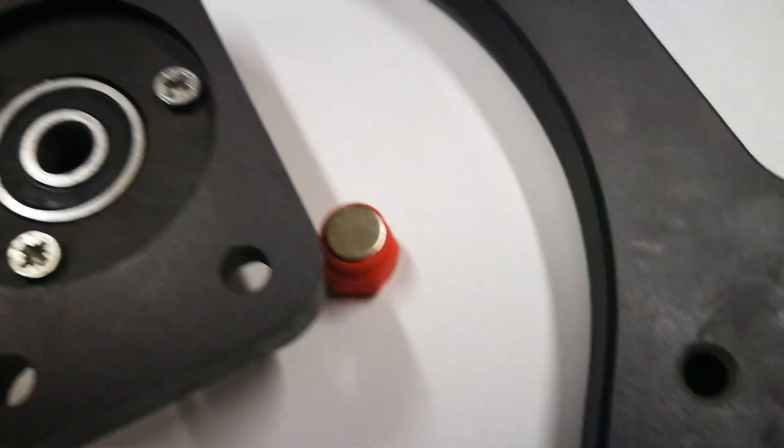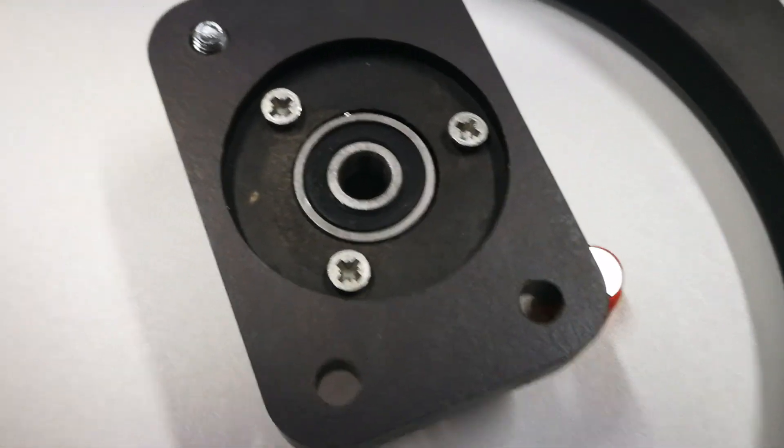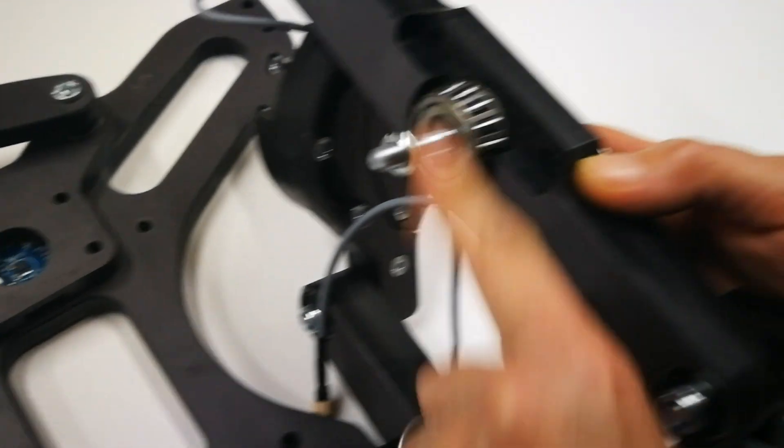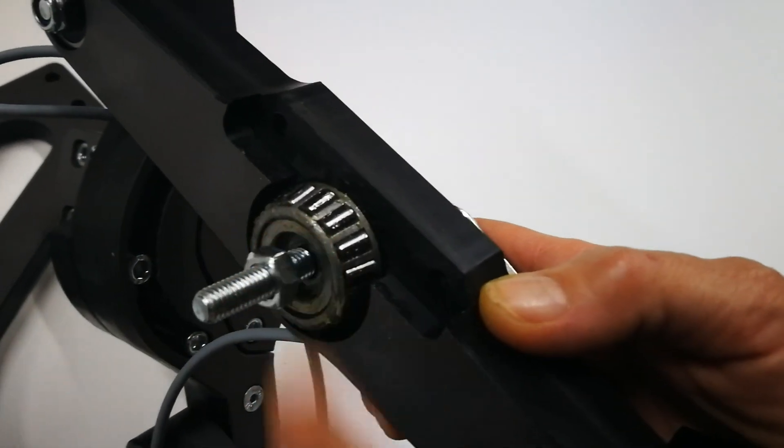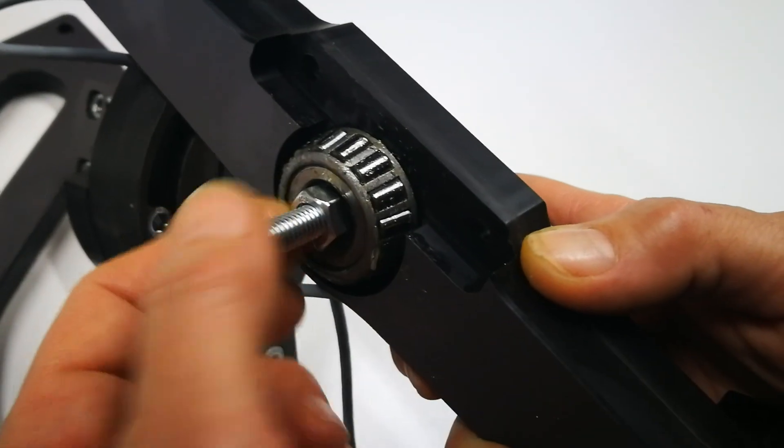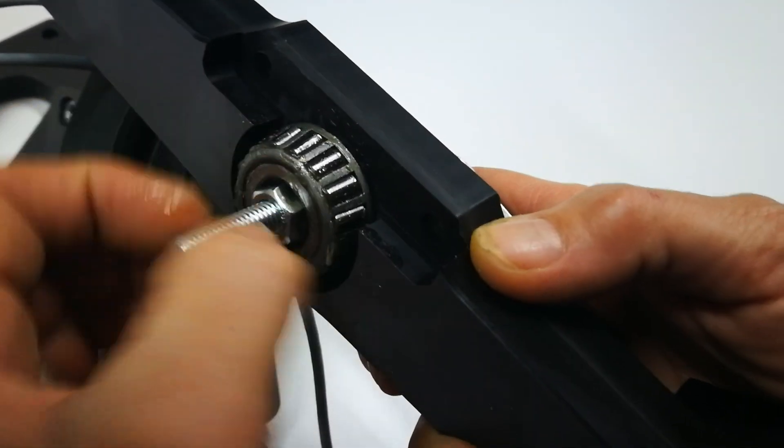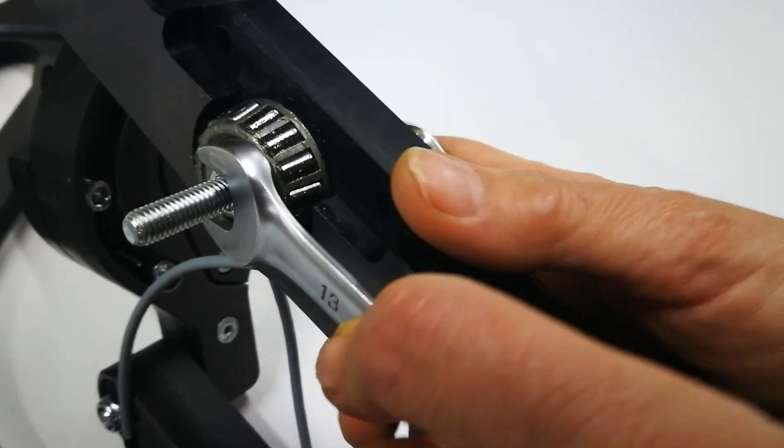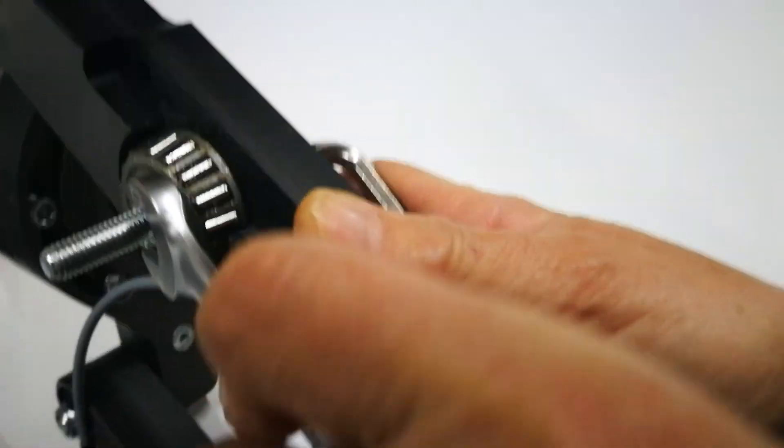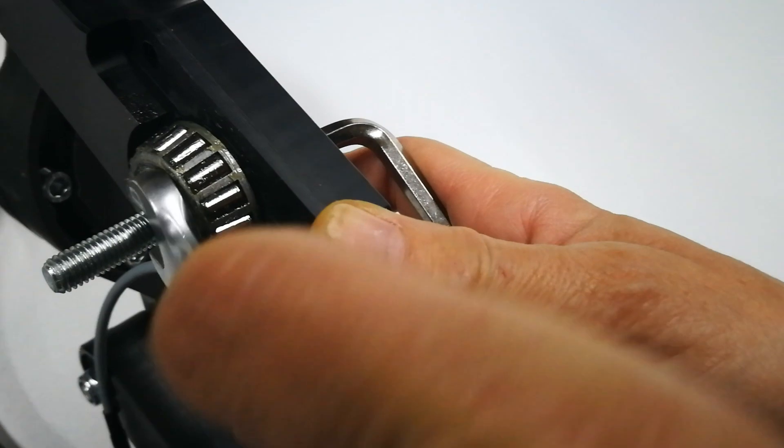Be careful because the bearing can fall out. You simply apply the M8 metric nut inside and tighten it really good. It's not simple to screw in because the bearing goes over it.